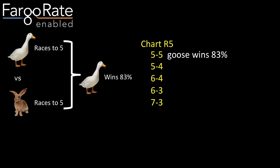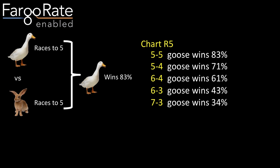Going back to the Goose and the Rabbit — as you recall, when they played five-to-five, the Goose wins 83% of the time. What about the other matchups in the R5 match chart? For the top three matchups, the Goose is still the favorite. For the bottom two matchups, the advantage switches over to the Rabbit. So we're doing a handicap tournament — which one of these do we pick? This is where the concept of hot, medium, and mild handicaps comes in.